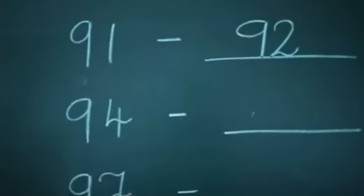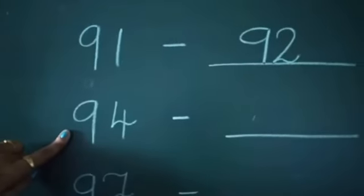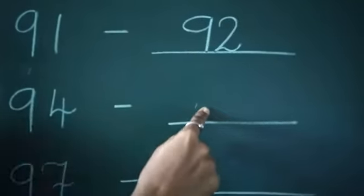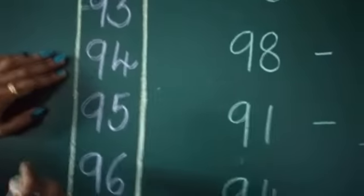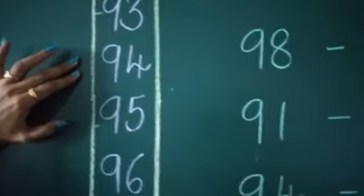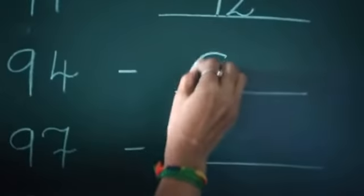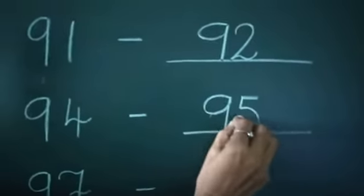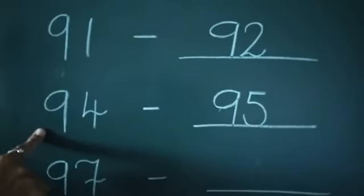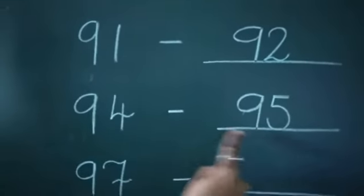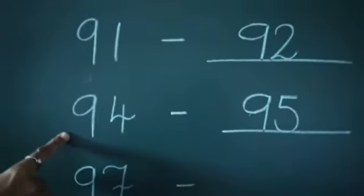Next, number ninety-four. Which number comes after? Look at here — number ninety-four. Which number comes after? Number ninety-five. So number ninety-five comes after number ninety-four.